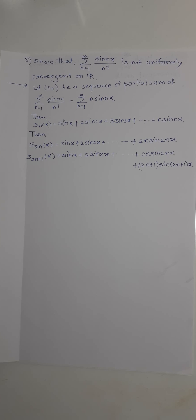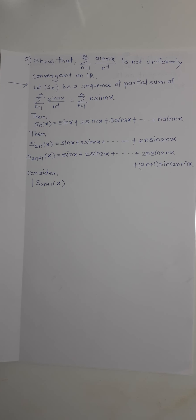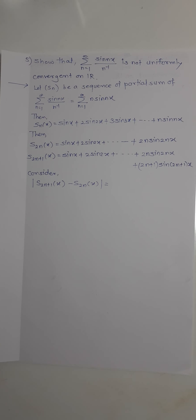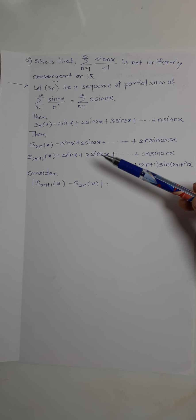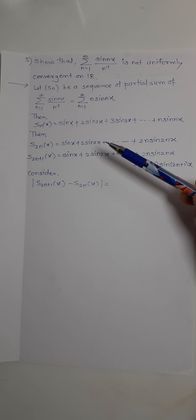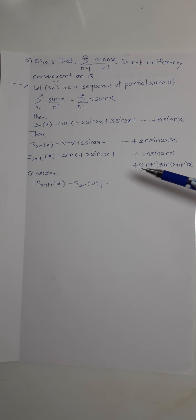Now when we subtract, consider |S_{2n+1}(x) − S_{2n}(x)|. When you subtract, all terms get cancelled — sin(x) cancels with sin(x), 2·sin(2x) cancels with 2·sin(2x) — and only the last term remains: (2n+1)·sin((2n+1)x).